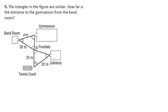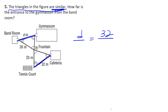Now we have question number 5. The triangles are similar, which means we can set up a proportion. We need to figure out how far is the distance from the gymnasium to the band room — that distance is D. We know that's proportional to the distance from the cafeteria to the tennis court, which is 32. Now let's figure out side number two — the distance from the band room to the water fountain is 30. The distance from the water fountain to the tennis court is 25 meters.